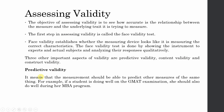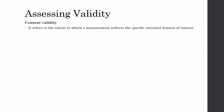Three other important aspects of validity are predictive validity, content validity, and construct validity. Predictive validity means that the measurement should be able to predict other measures of the same thing. For example, if a student is doing well on the GMAT examination, they should also do well during their MBA program. Similarly, your job satisfaction should be able to better predict your job commitment.